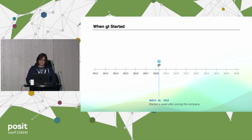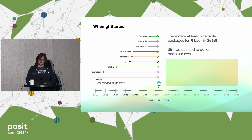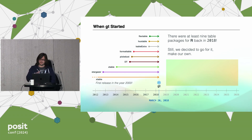GT started in 2018, March 20th. That day is when I started the GitHub repo. It was a week after I joined the company, which was then RStudio. Back then there were at least nine table packages for R. Great names too, like Pixie Dust, Stargazer — xtable was first released in the year 2000. I wasn't deterred by this. We decided to go for it and make our own, because why not?